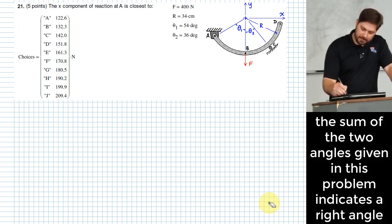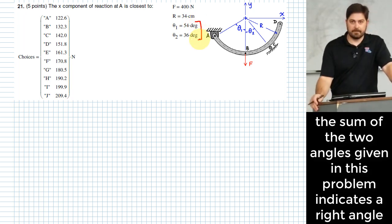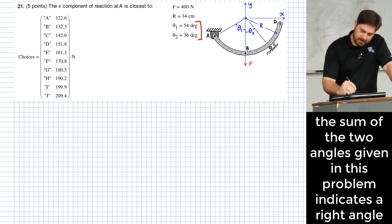What is the sum of 54 degrees and 36 degrees? Okay. 90 degrees. That means that this line right here is perpendicular to that line right there because of the numbers that you're given.